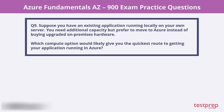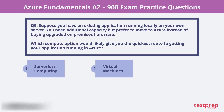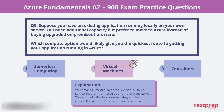Question 9. Suppose you have an existing application running locally on your own server. You need additional capacity but prefer to move to Azure instead of buying upgraded on-premises hardware. Which compute option would likely give you the quickest route to getting your application running in Azure? Is it serverless computing, virtual machines, or containers? The correct choice would be a virtual machine. You have full control over the VM setup, so you can configure it to match your on-premises server. This will allow your existing application to run on the Azure VM with little or no change.